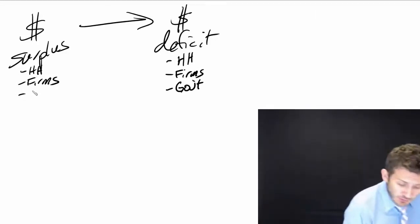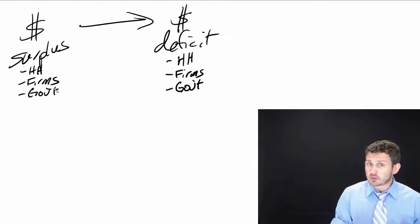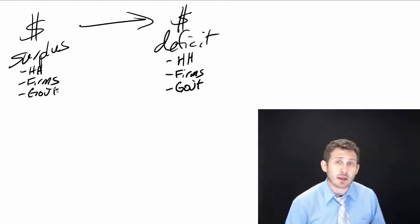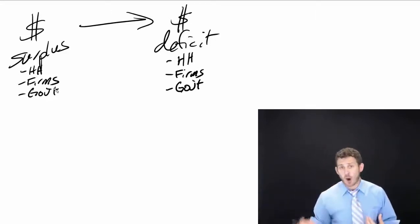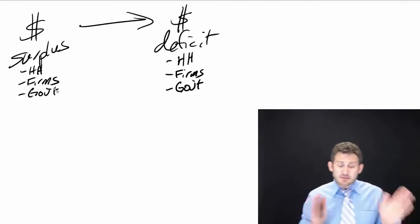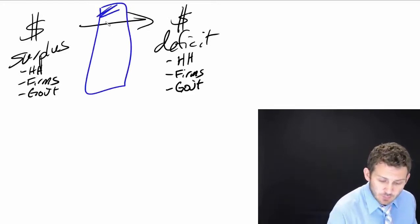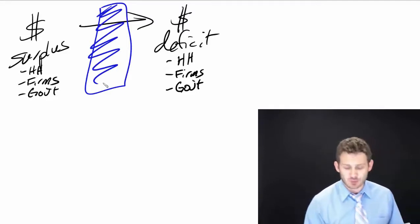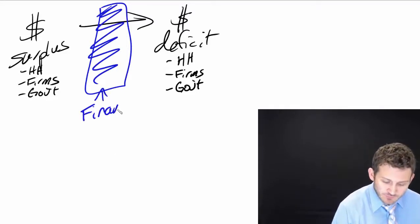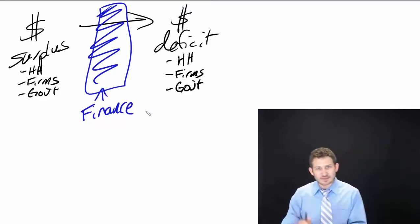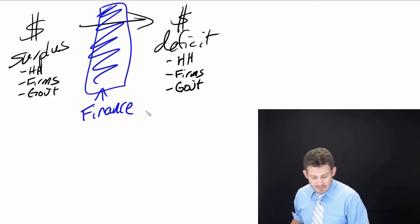And then we also have government as a surplus unit. As we were talking about, many of you have student loans — a lot of those loans are facilitated by the federal government. So the federal government is a lender and you are a borrower. So basically what we have here is that this entire area in the middle — this kind of black box here, which I'm drawing blue — is basically going to be the field of finance. It is how we facilitate the transfer of funds from those with them to those that need them.